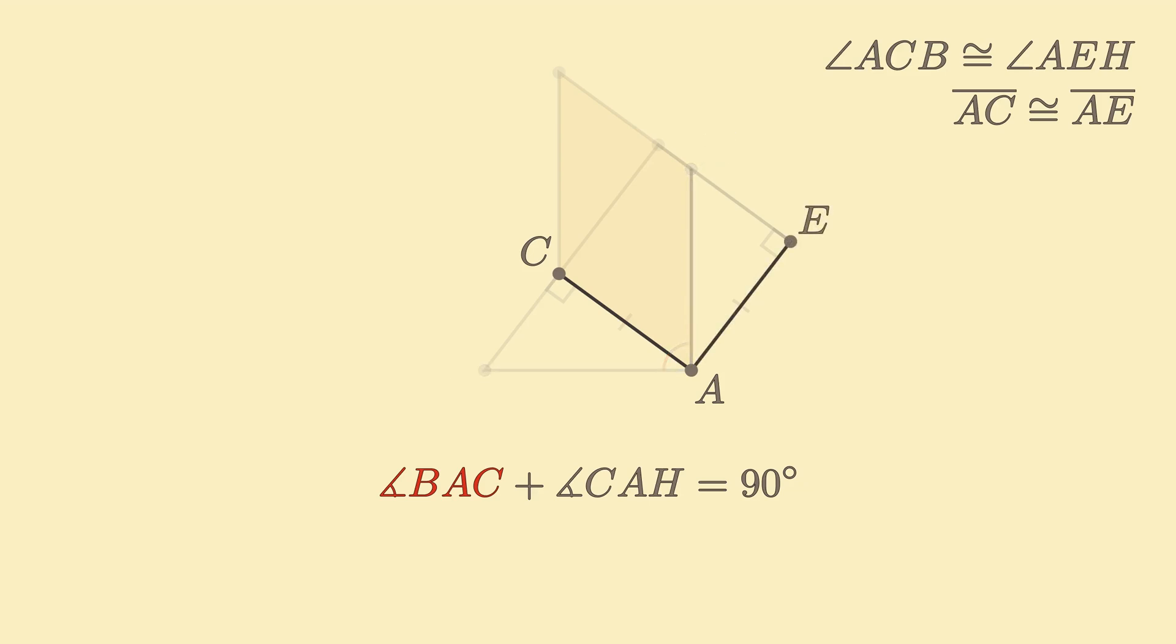Next, we focus on angle CAE. Since AEDC is a square, we know that angle CAE is also 90 degrees. Splitting angle CAE into angles CAH and HAE then reveals to us that angle BAC and angle HAE must have the same measure, so they must be congruent.